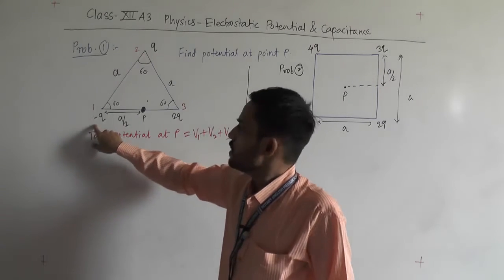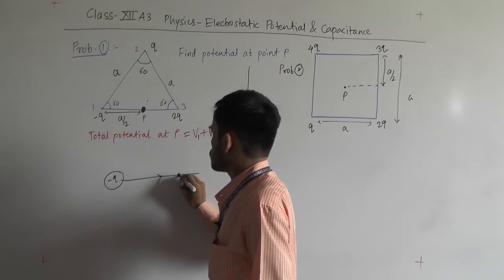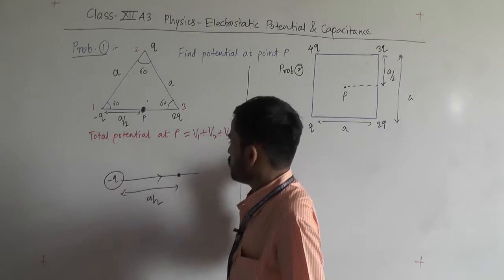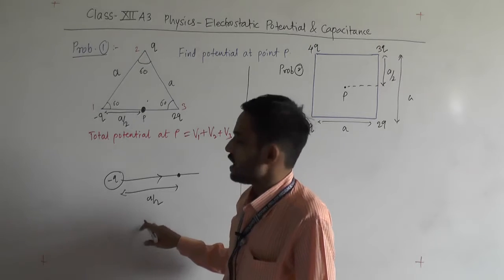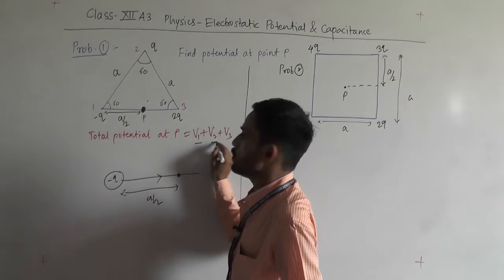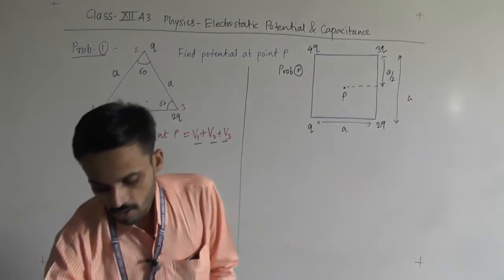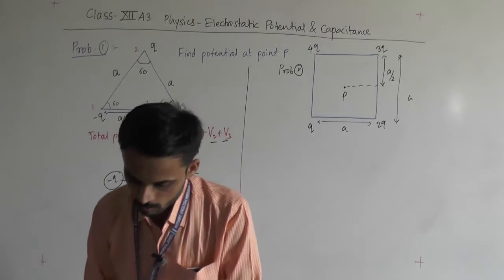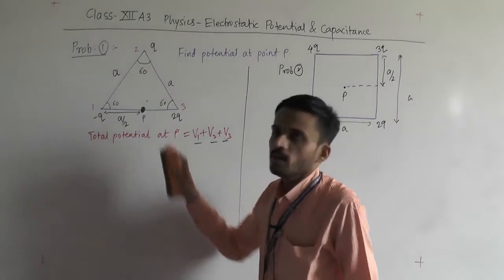Minus q has its field lines, and P is at a distance a by 2. Work done to move the charge from infinity to that point divided by q gives the potential: k Q upon r. Keep the plus or minus sign of each charge. Compute V1, V2, V3 with their signs and sum them. I will tell you the answer afterwards — first try to calculate it yourself.